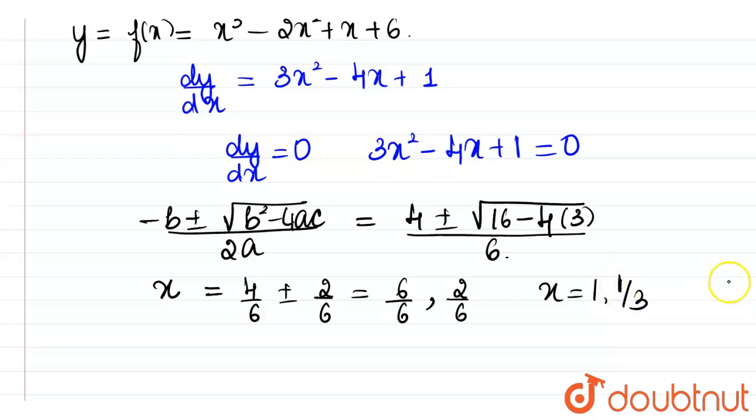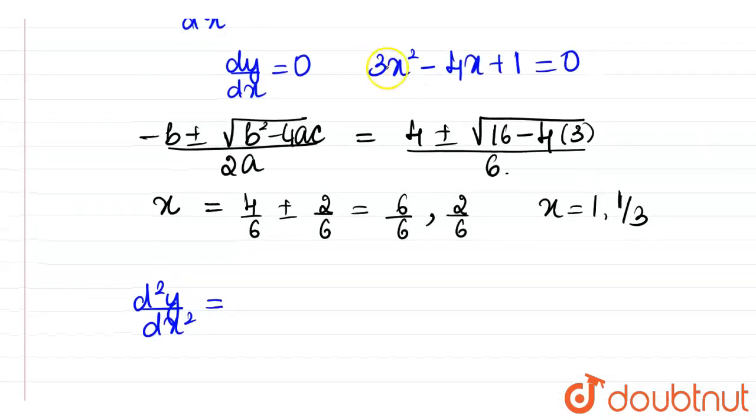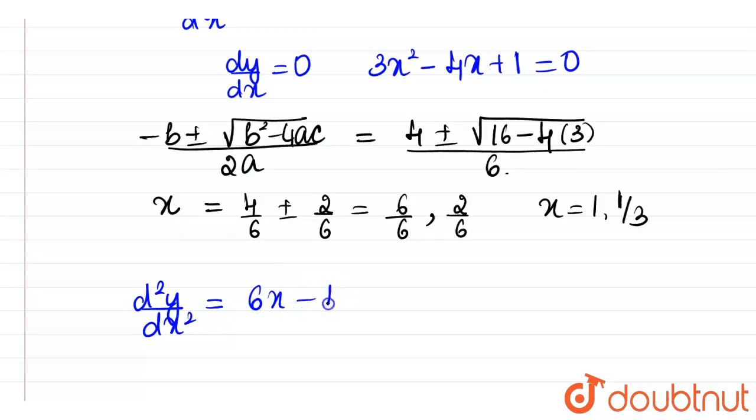Now, if at all I am equating this equal to 0, we got the roots. Now further let's try to find out the second differential. So d square y by dx square. So if I am finding out d square y by dx square, we have to differentiate 3x square minus 4x plus 1. So that will be equal to 6x minus 4.